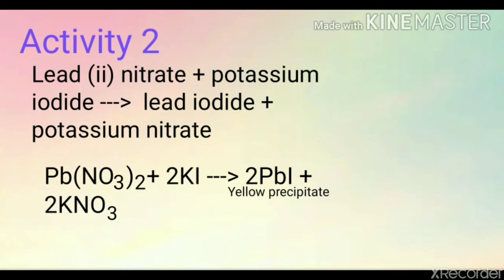The second activity is the reaction between lead nitrate and potassium iodide. First, we will take lead nitrate solution in a test tube. Now, add potassium iodide solution to this test tube. We will observe a yellow precipitate in the test tube due to the formation of lead iodide. Here, this observation of yellow precipitate helps us to determine that a chemical reaction has taken place.